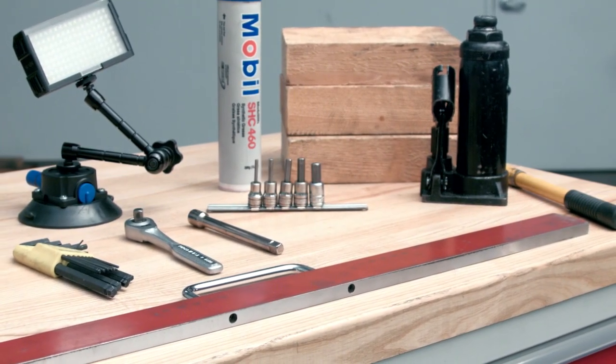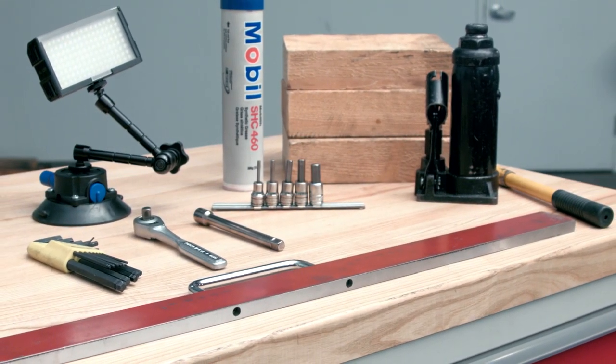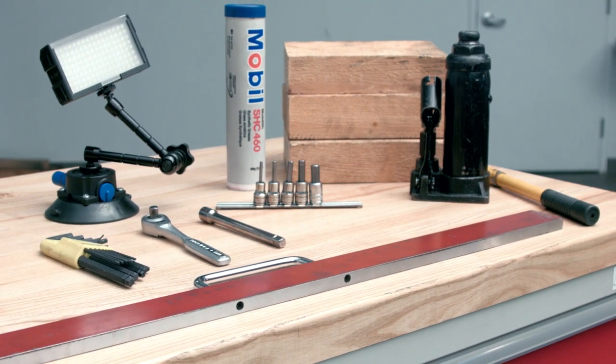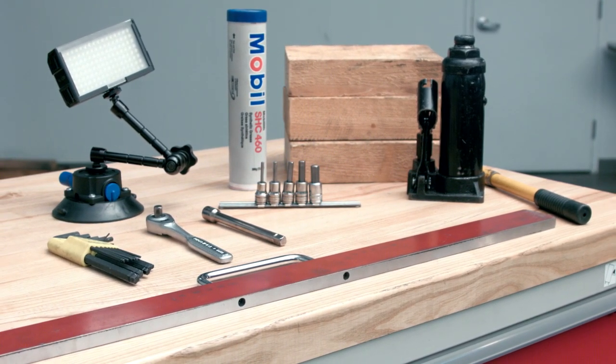You'll need the following tools to do this job: a bottle jack, wood blocks, a set of allen keys, a ratchet set, portable work light, a long straight edge and some grease. So let's get started.